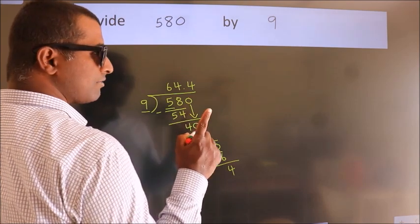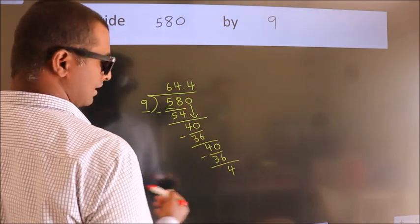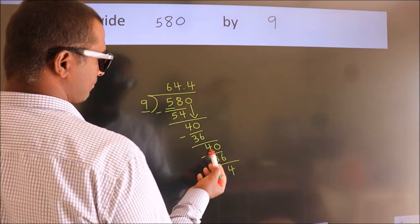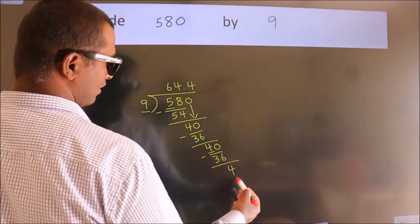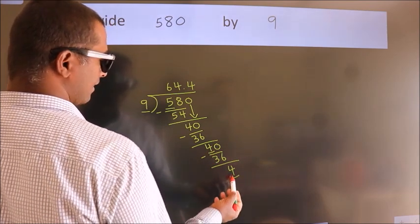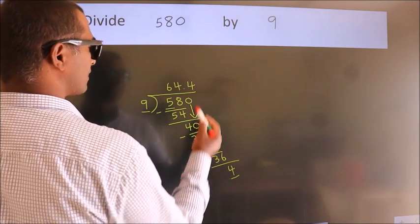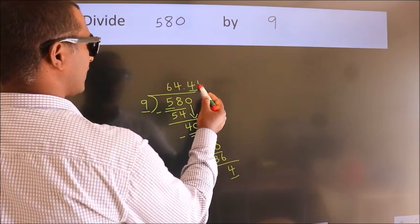Now you observe, here we had 4 and we got 4 again. That means this number keeps on repeating.